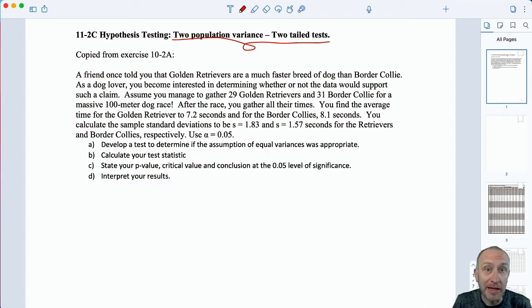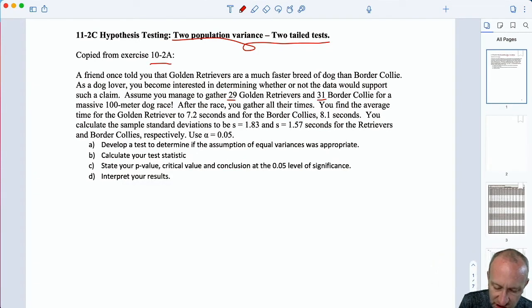This one is coming. I've copied it from problem 10-2A. Not sure if you've done all of those problems yet, but this was a two-population T test. Here we were told by a friend that golden retrievers are a faster breed of dog than border collies. As a dog lover, you are interested in determining whether or not the data would support such a claim, so we take a sample of golden retrievers and border collies, put them on a 100-meter dog race, gather their times, and here we find the average time for the golden retriever and for the border collie. And back in chapter 10, module 10, we performed a test to see whether or not the average speed of the golden retriever, or I should say the average time for a golden retriever, was in fact less than the average time for the border collie, because then that would allow us to determine if it's faster.